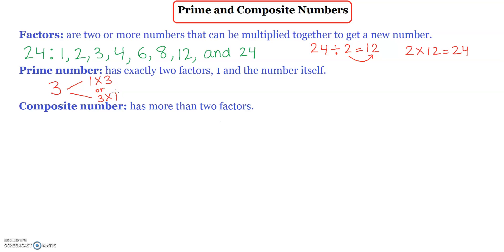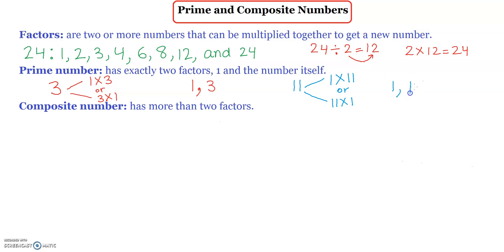According to the definition of a prime number, it has exactly two factors: 1 and the number itself — in our case, 3. Let's look at another example: 11. The factors of 11 are 1 times 11 or 11 times 1. Therefore, factors of 11 are 1 and 11, which is 1 and the number itself. So 11 is a prime number. We can have more prime numbers.